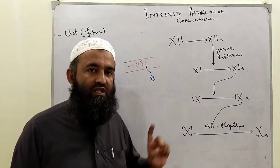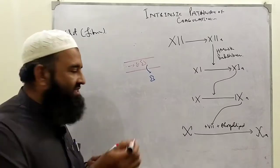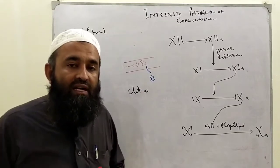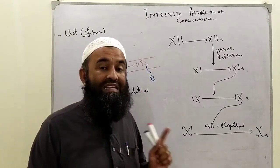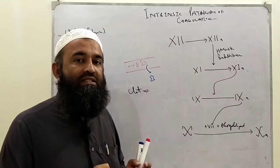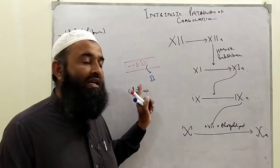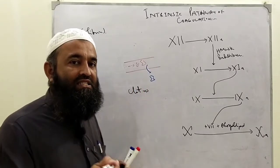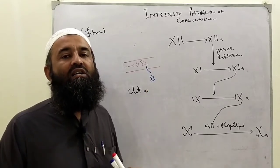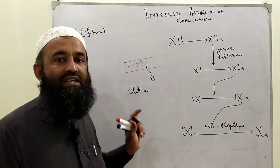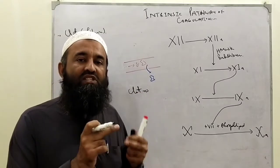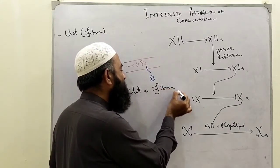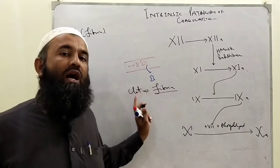Today we will do the intrinsic pathway. When we say blood is clotted, it means blood, which is normally fluid in nature, becomes solid or semi-solid with the formation of thread-like structures. That thread-like structure is called a clot. These thread-like structures which develop after activation of these pathways in the blood are called fibrin threads. So clot means fibrin.